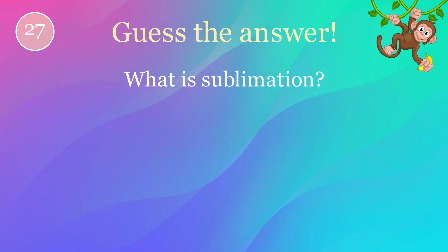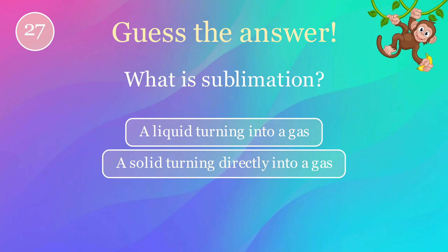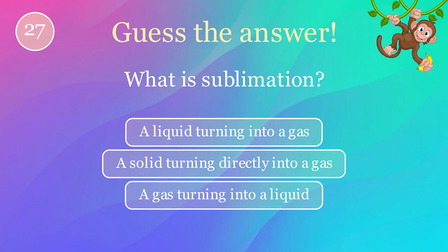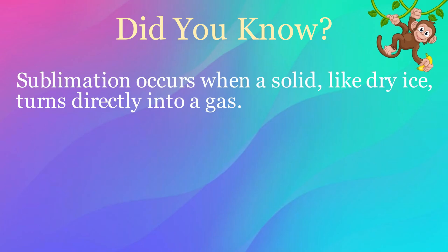What is sublimation? Options: a liquid turning into a gas, a solid turning directly into a gas, a gas turning into a liquid. The correct answer is a solid turning directly into a gas. Here's an interesting fact: sublimation occurs when a solid, like dry ice, turns directly into a gas.